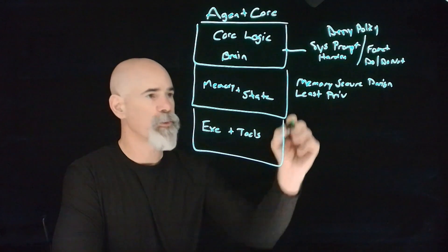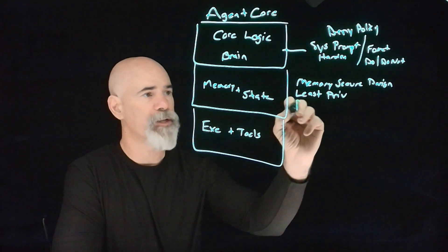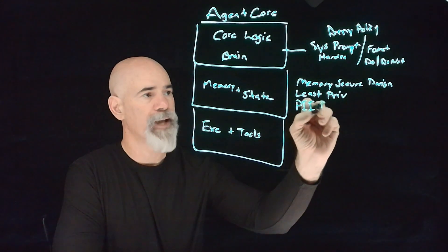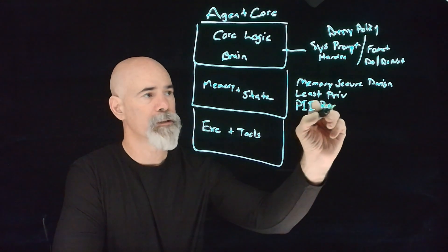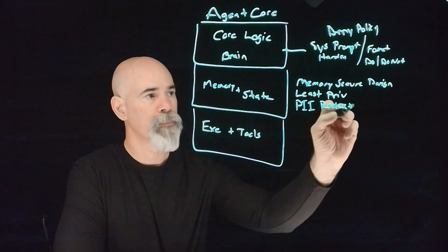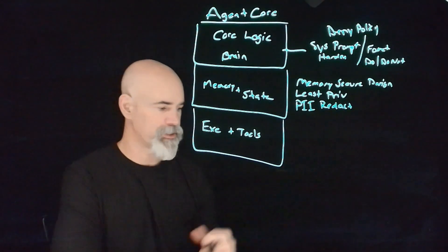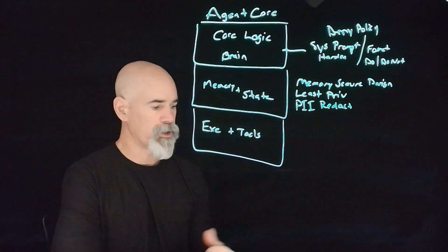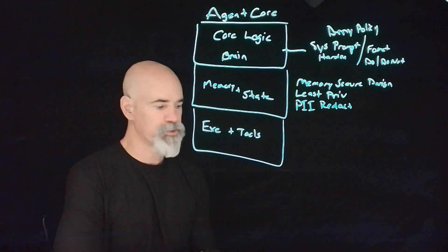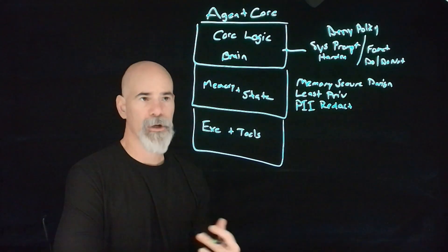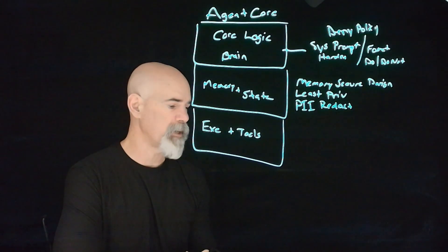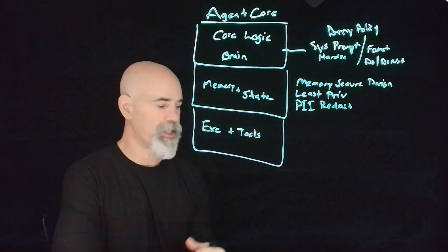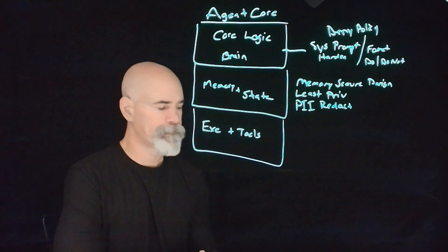We also want to make sure that we have sensitive data or PII redaction and protection. This means implementing automated mechanisms to identify and scrub any kind of PII or sensitive data, both from the inputs and the agent's long-term memory.